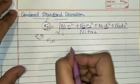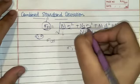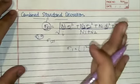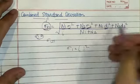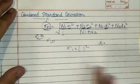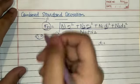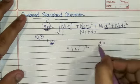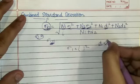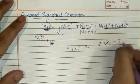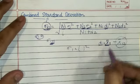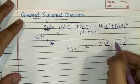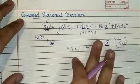Now let's understand d1 and d2. d1 is the deviation of the mean of the first group from the combined mean. For two groups we have d1 and d2; if there are three groups we add d3 as well. To find d1, we take the mean of the first group minus the combined mean.